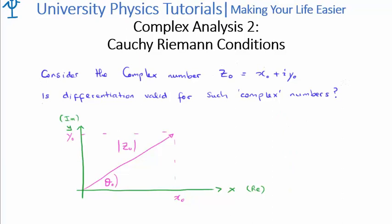And the question posed in the derivation of the Cauchy-Riemann conditions is, is differentiation valid for complex numbers? Now, of course, differentiation is valid for the real numbers, but we don't know if it's actually valid for imaginary numbers. It's not necessarily very clear or obvious.